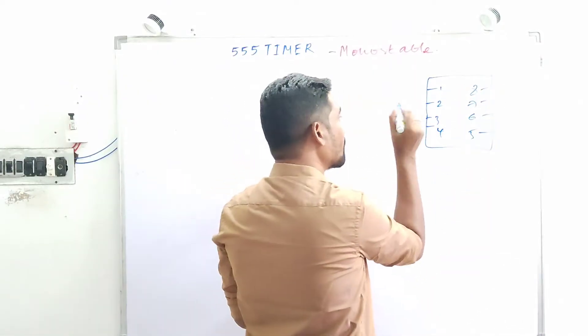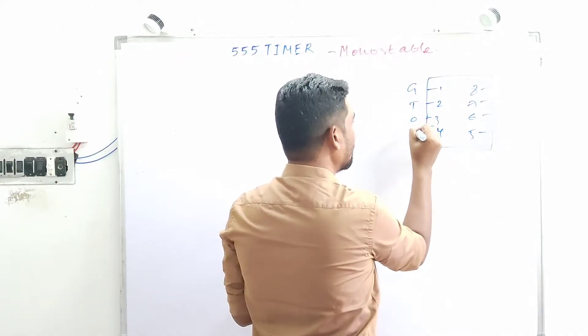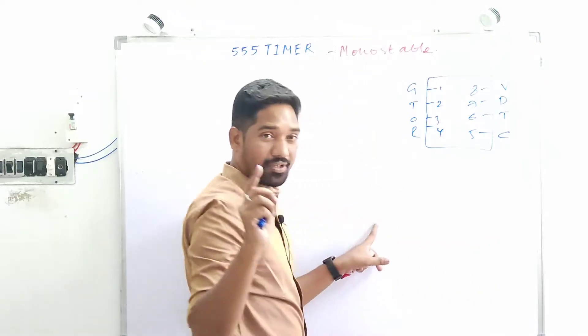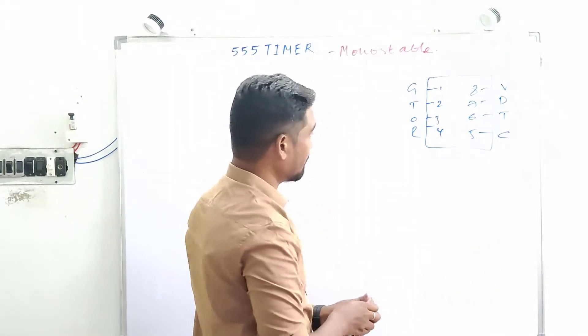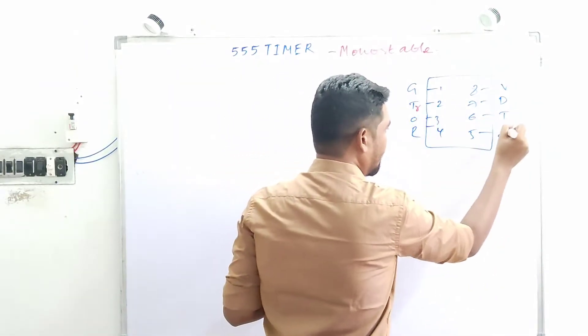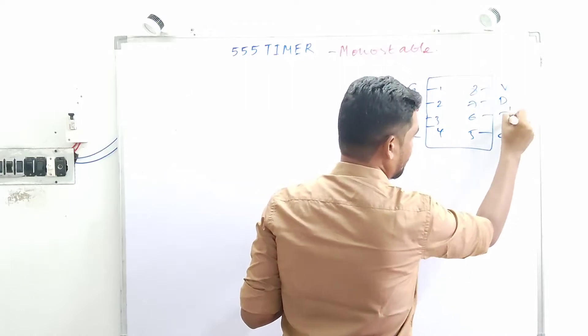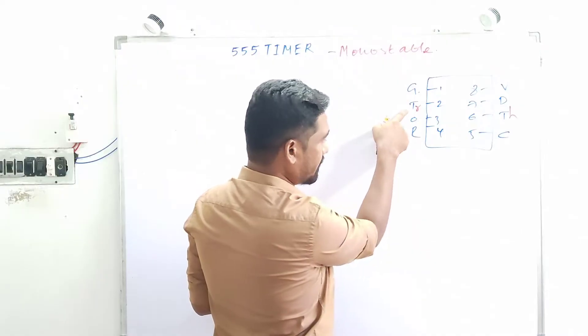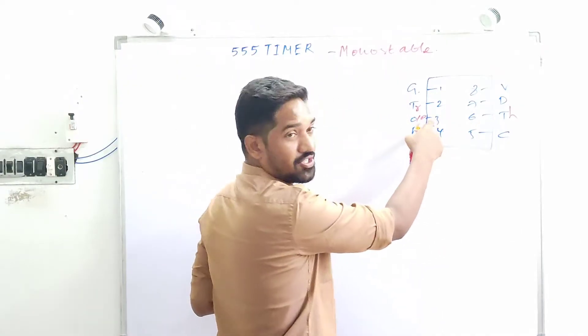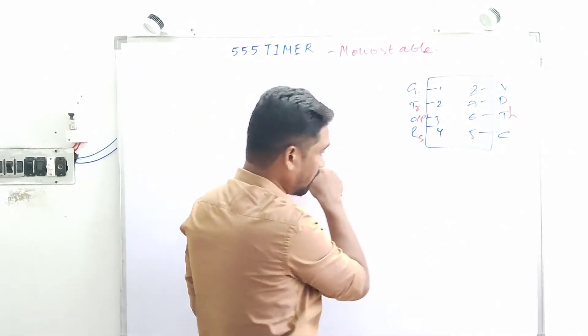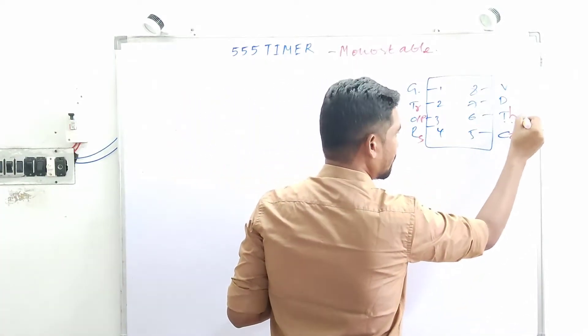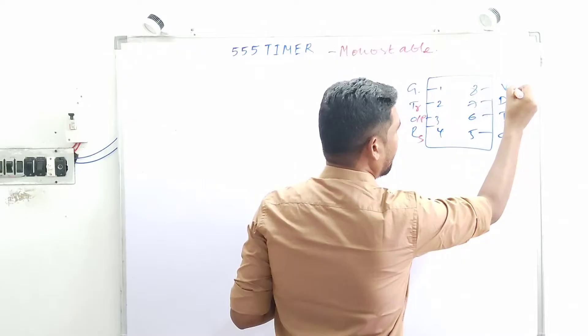It goes like this: G, T, O, R, C, T, D, V. Two things, T goes like this. The first T is trigger, and the second T is threshold. G for ground, T for trigger, O for output, third pin is output. R for reset flip-flop, C for control voltage, T for threshold, D for discharge, and V for VCC.